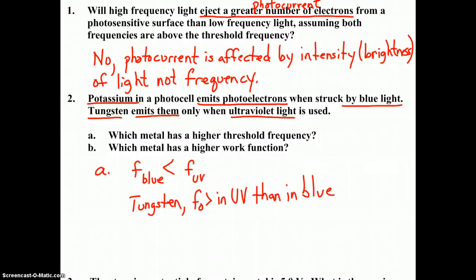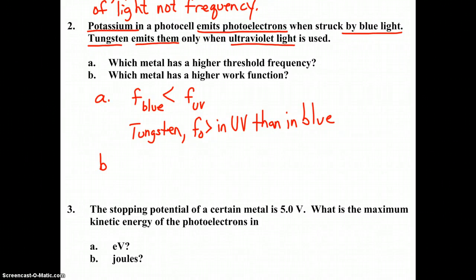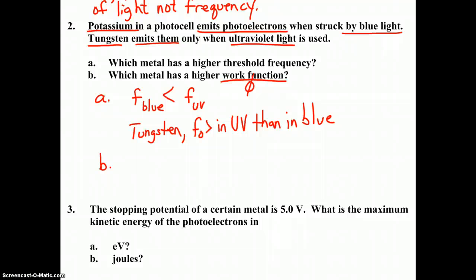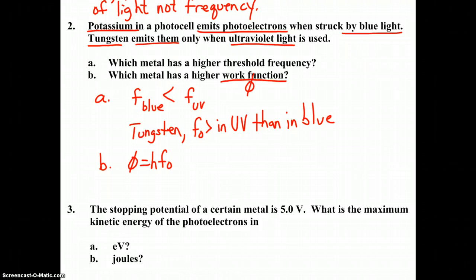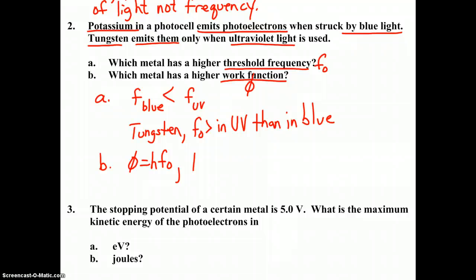Part B: which metal has a higher work function? In order to answer this, we have to know what work function is. If we remember from page 4 of our photoelectric effect notes, the symbol for that was phi (φ). What's the equation that relates phi to frequency? That, of course, is φ = hF0. From this we can see that phi has a direct relationship with the threshold frequency F0. Therefore, which metal has a higher work function? Once again the answer is tungsten.